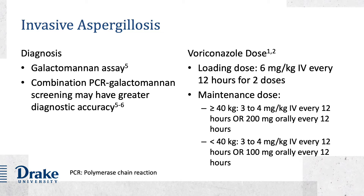Additionally, concurrent or recent use of piperacillin-tazobactam and amoxicillin has a potential for cross-reactivity, which in turn may result in a false positive galactomannan assay. A polymerase chain reaction test, or PCR test, may also be performed to rule out invasive aspergillosis in patients at high risk, but it should not be used as a sole biomarker for diagnosis. According to a recent systematic review published in Clinical Microbiology and Infection, combination of aspergillus and galactomannan screening may have greater diagnostic accuracy in high-risk patients.